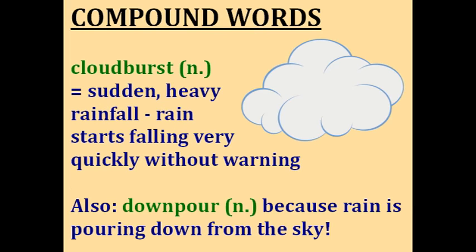Cloudburst. You probably already know that a cloud is a cloud and the word burst means to explode. So a cloudburst is a sudden heavy rainfall when rain starts falling very quickly without warning — it's like the cloud exploded with rain. Another compound word for heavy continuous rain is a downpour, because rain is just pouring down out of the sky.